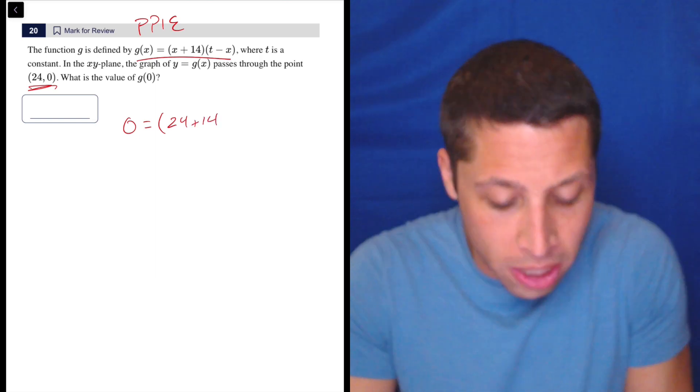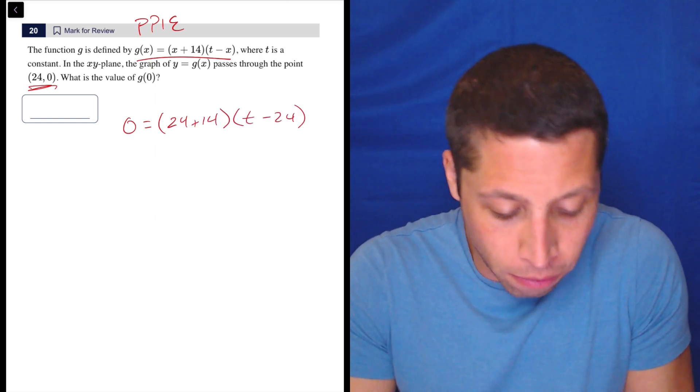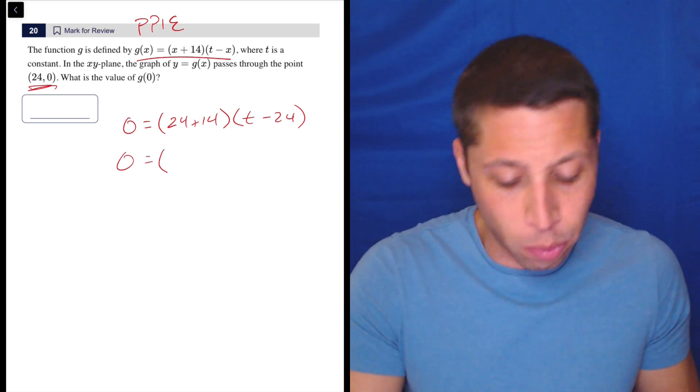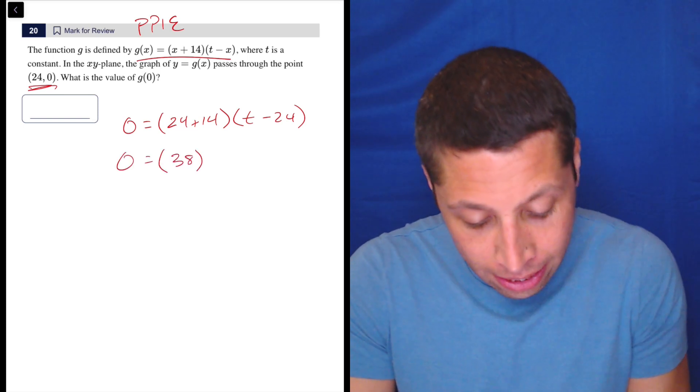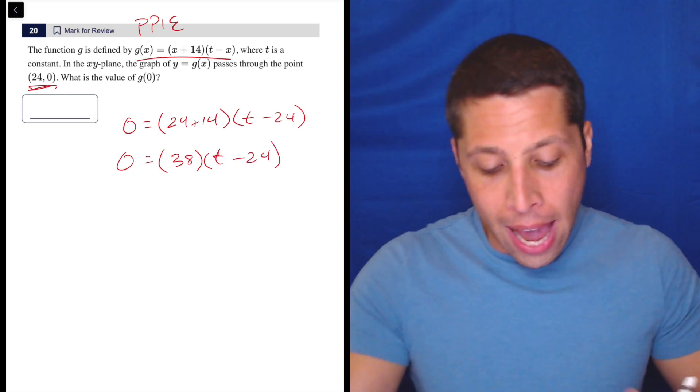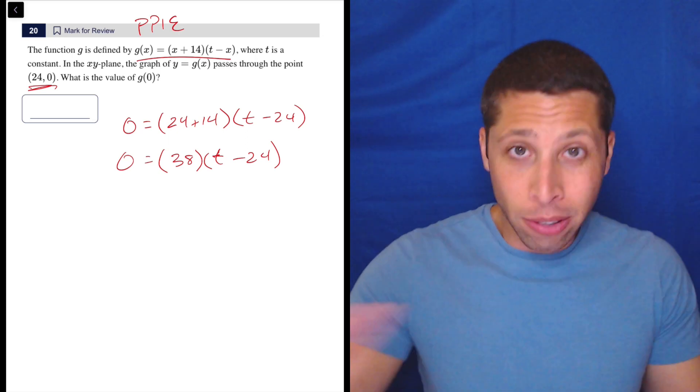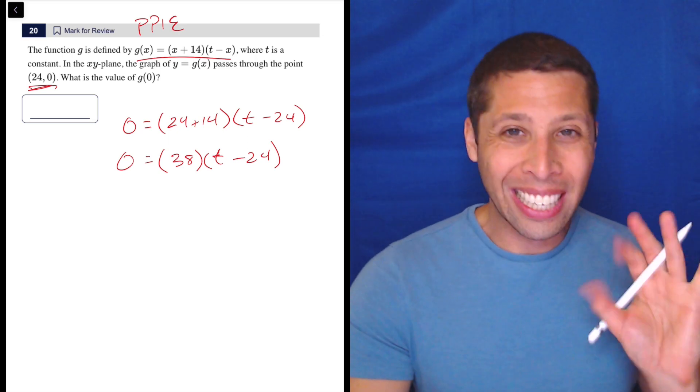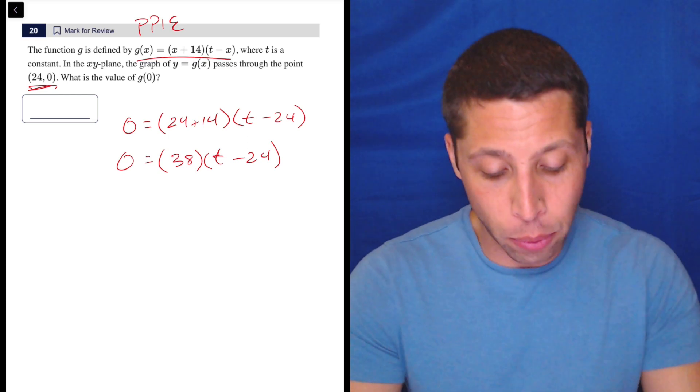24 plus 14 times T minus 24. So we can simplify if we want. Out of habit, you might just say, okay, 24 plus 14, that's 38. And then T minus 24 goes here. And from there, you could foil it out and solve for T. Totally fine. Or distribute it out and solve for T. But the key piece that I really think everyone needs to get...